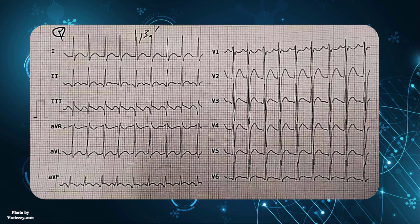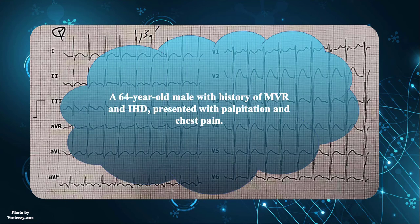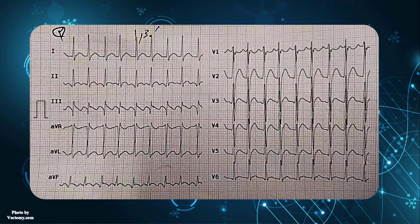The present EKG is obtained from a 64-year-old male with history of mitral valve replacement and ischemic heart disease, presented with palpitation and chest pain. On physical exam, he has tachycardia and the hemodynamic is stable. What do you think about this strip?